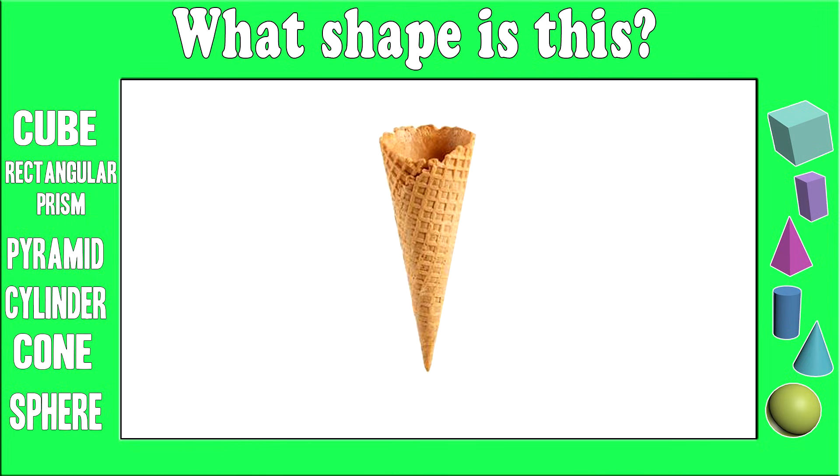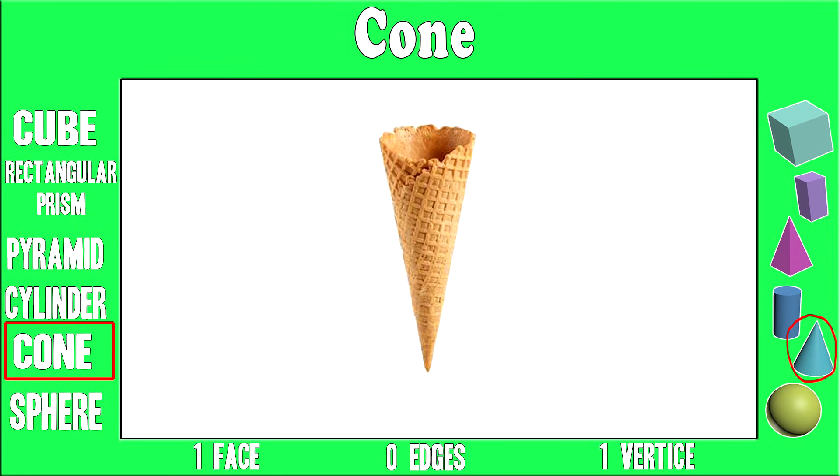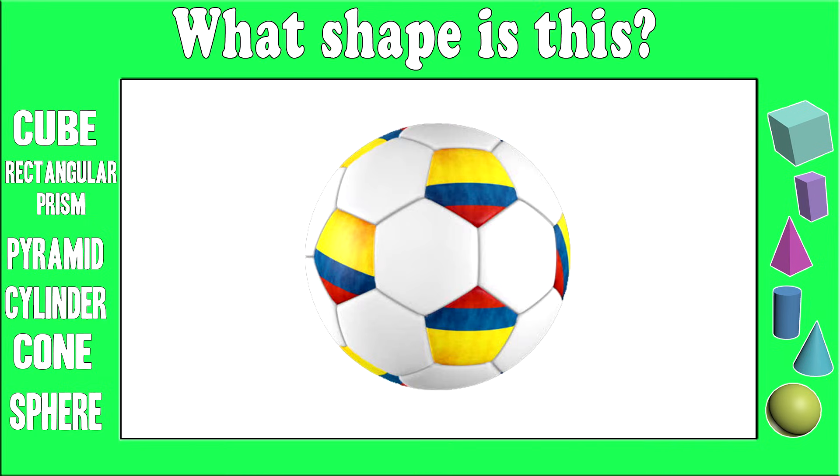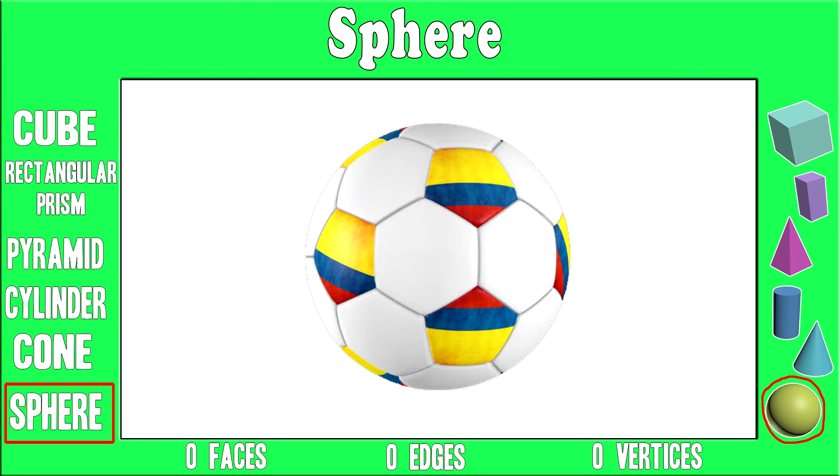What shape is this? Correct! It's a cylinder. What shape is this? You're right! It's a cone. What shape is this? Excellent! It's a sphere.